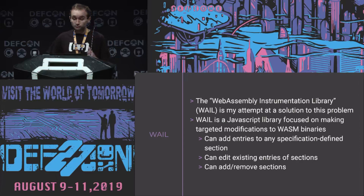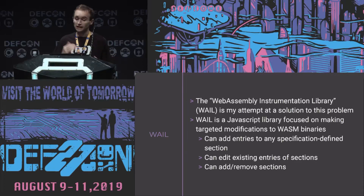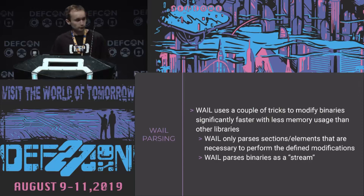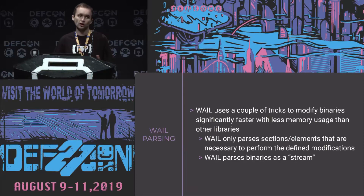WAIL is a JavaScript library specifically focused on making targeted modifications to WebAssembly binaries. If you think of a WebAssembly binary like an ELF file, an ELF file has sections with different purposes, and so does a WebAssembly binary. WAIL can add entries to any section of the binary, edit existing entries, and add or remove sections. WAIL uses a couple of tricks to modify binaries much faster and with less memory than other libraries. First, WAIL only parses the sections or elements that are necessary to perform the modifications you've defined — if a modification doesn't require parsing the code section, it just skips it.